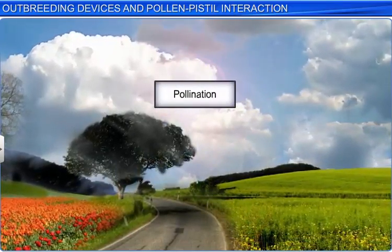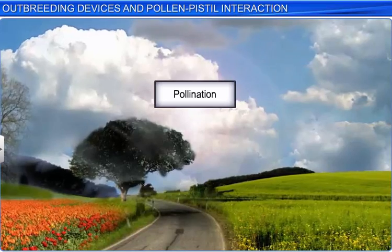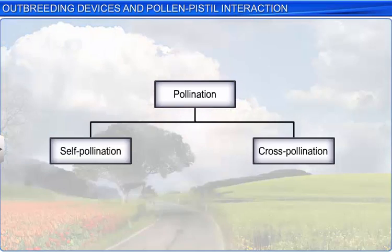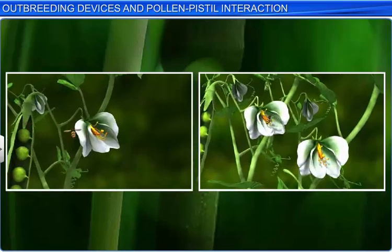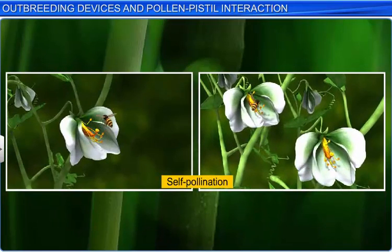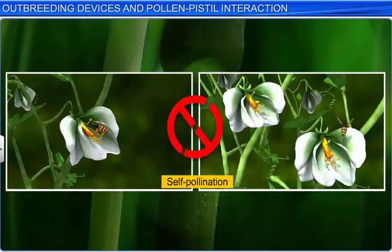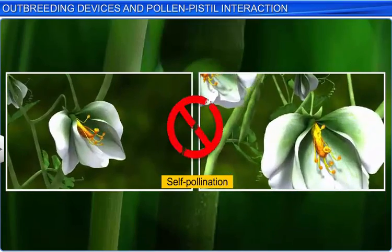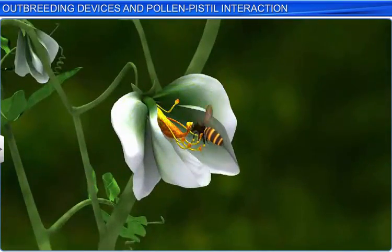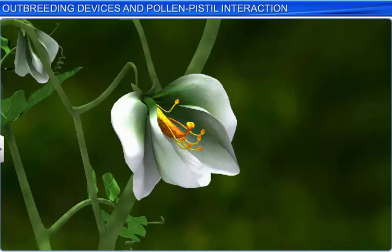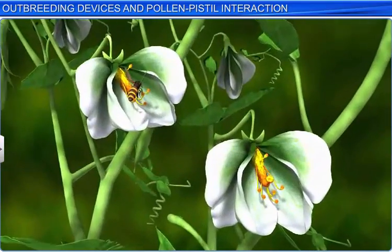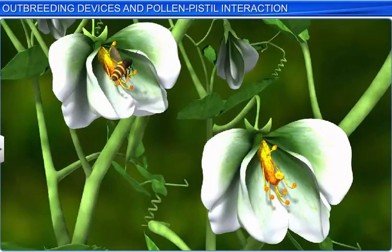Pollination, which results in the transfer of pollen to the stigma, is of two types: self-pollination and cross-pollination. Continuous self-pollination or inbreeding throughout successive generations is not desirable as it leads to inbreeding depression, a condition characterized by a decrease in genetic vigor and vitality, which results in reduced fitness in offspring.